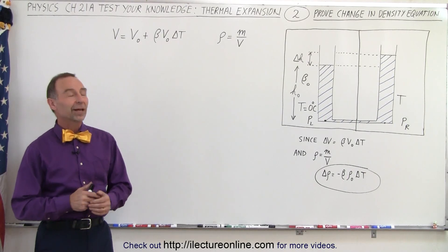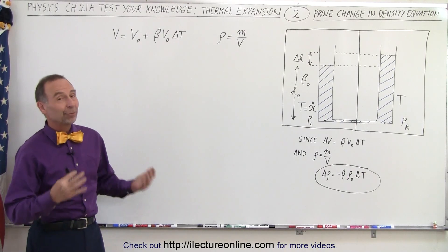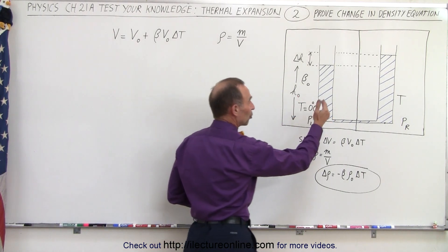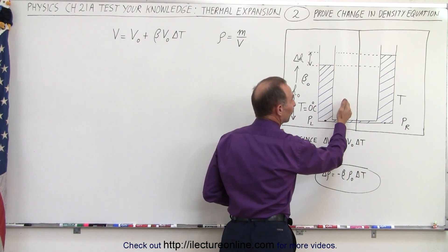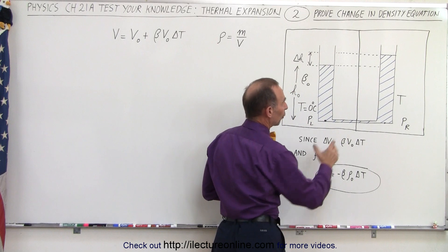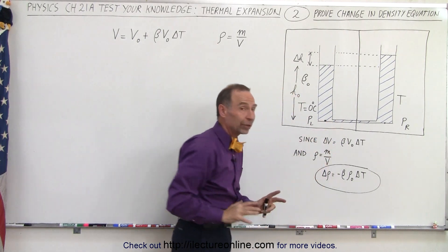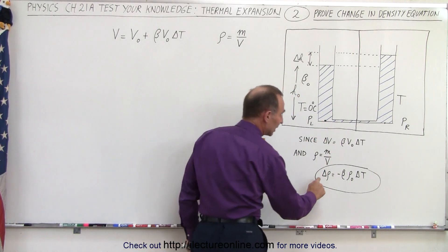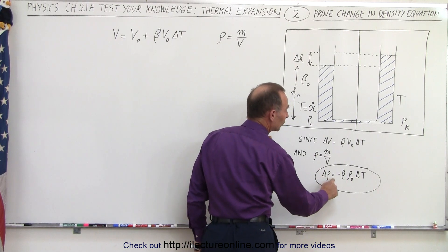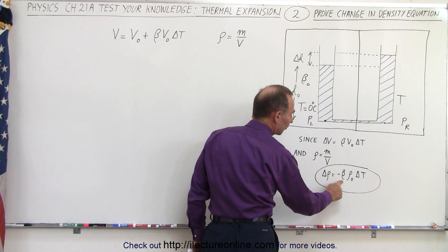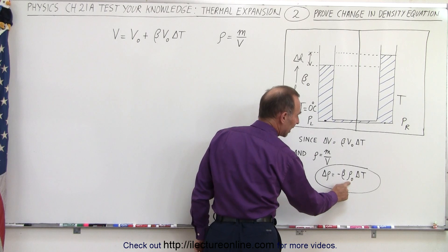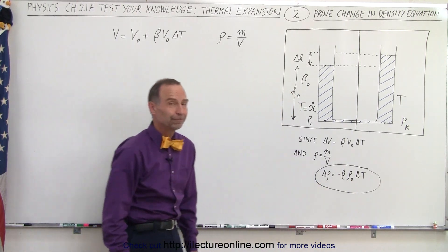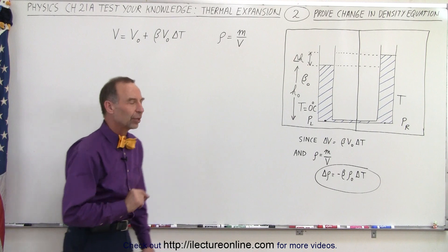Welcome to Electron Line. In the previous video, we had this interesting contraption where we could measure directly the coefficient of volume expansion for any liquid, regardless of what container it's in. We made the assumption that the change in density equals the negative of that coefficient of volume expansion times the original density times the change in temperature. Now let's try to prove that equation.